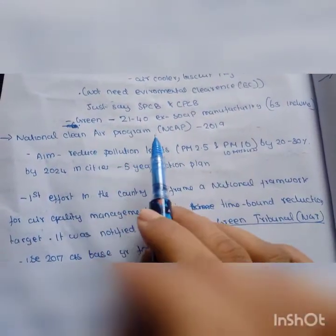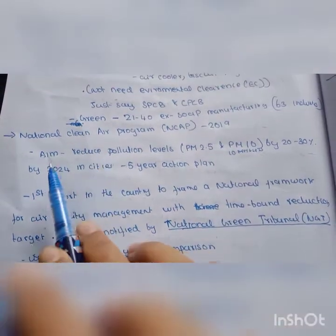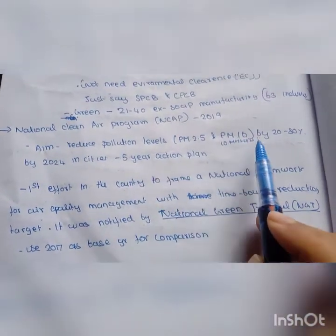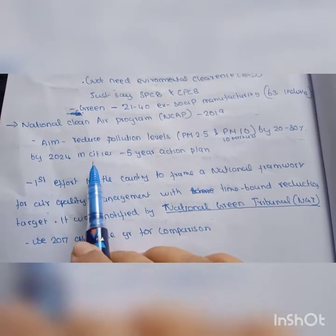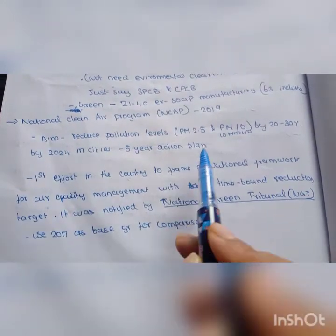National Clean Air Program launched in 2019 with the aim to reduce pollution levels. Particulate matter PM 2.5 and PM 10 to be reduced by 20 to 30 percent by 2024. This is a 5-year action plan.